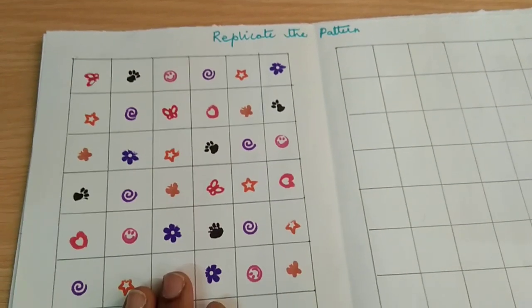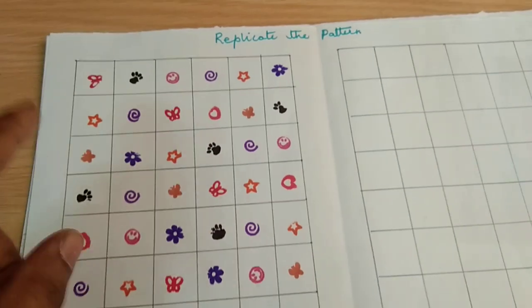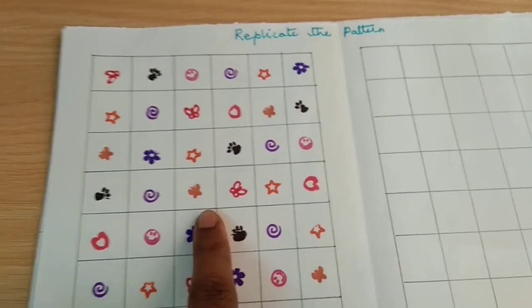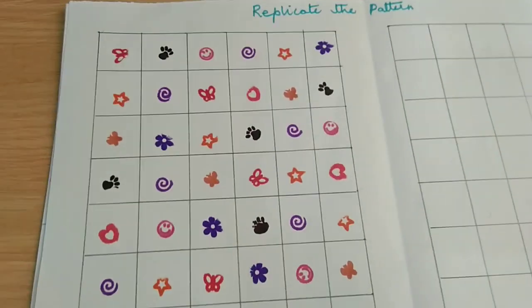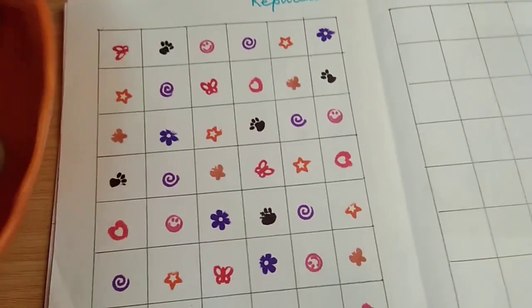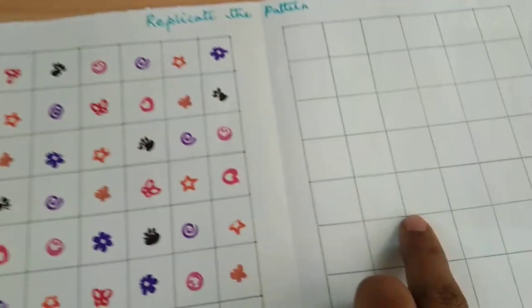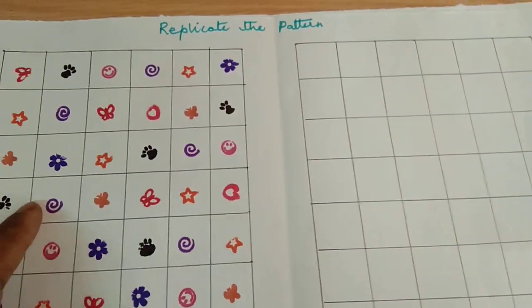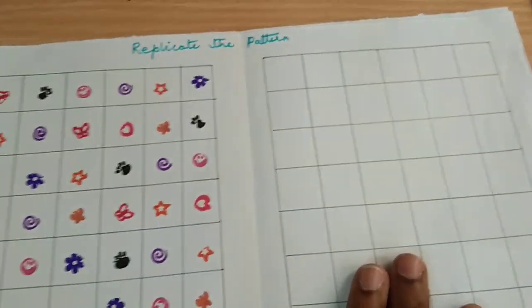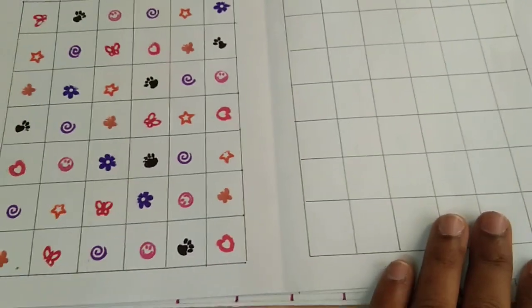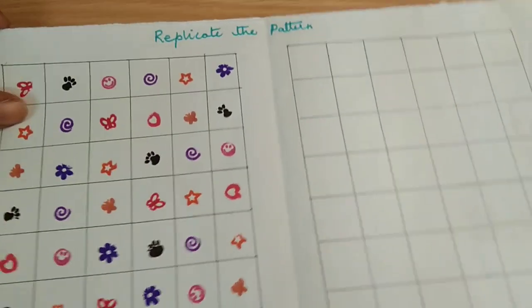I have given one side grid with all the patterns. I have these stamp markers or these pens, and the other side it is empty. What the child has to do is he has to copy this pattern here. He needs to check which grid, which box has which pattern and then stamp it in each of the boxes.